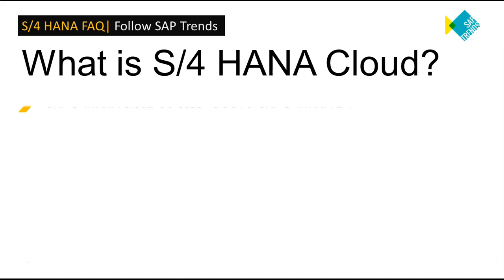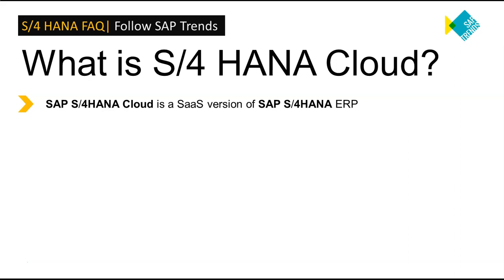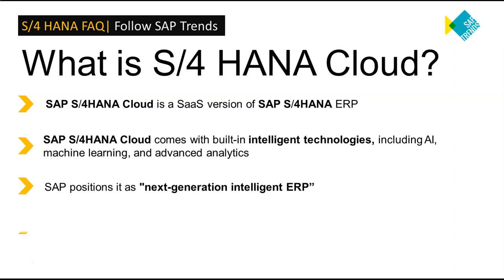What is SAP S4 HANA Cloud? SAP S4 HANA Cloud is a SaaS version of SAP S4 HANA ERP, a suite of integrated business applications. SAP S4 HANA Cloud comes with built-in intelligent technologies including AI, machine learning, and advanced analytics. It helps companies adopt new business models, manage business change at speed, orchestrate internal and external resources, and use the predictive power of AI. According to SAP, the intent was to provide a next-generation intelligent ERP system that enables companies to achieve digital transformation.